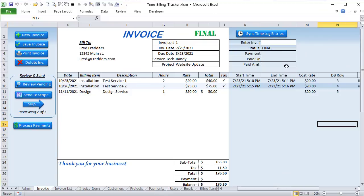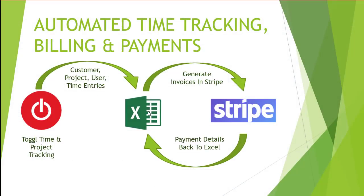I've got a really unique and incredible training today. I'm going to show you how you can create your own fully automated billing system. We're going to go through every step — you'll be able to track your time, your projects, your customers through any device using an incredible third-party application, then automatically bring that information back into Excel. On a single click, we'll generate invoices, send that to Stripe, Stripe will create an invoice and payment link, the customer clicks to pay, and that payment tracks automatically back into Excel.